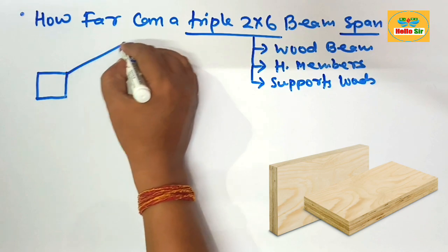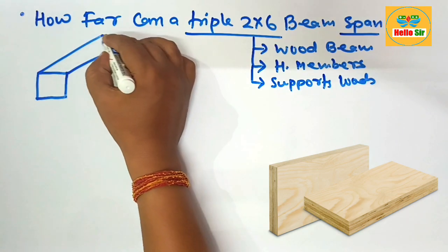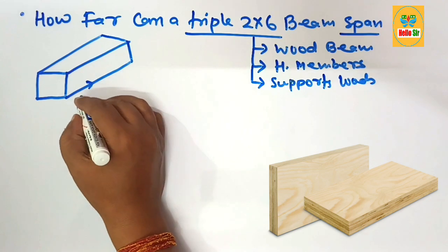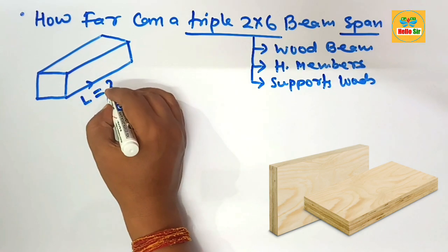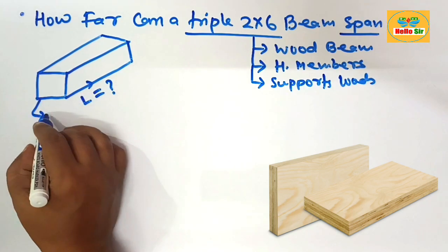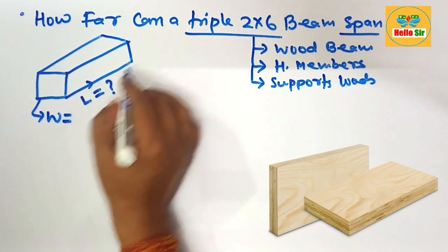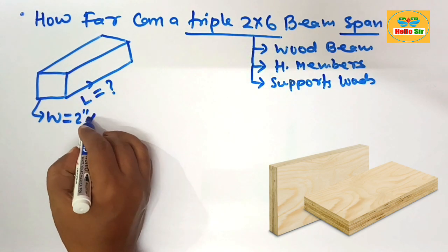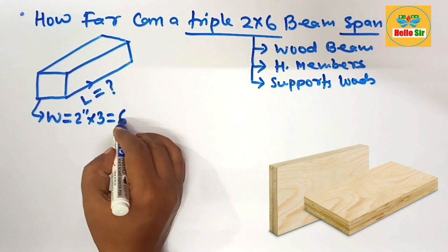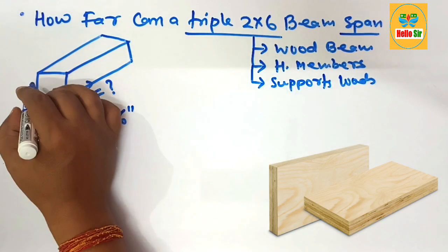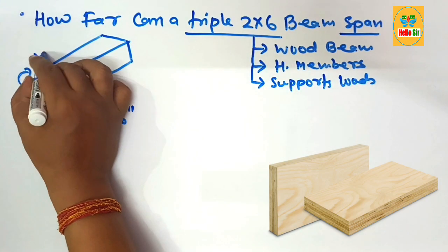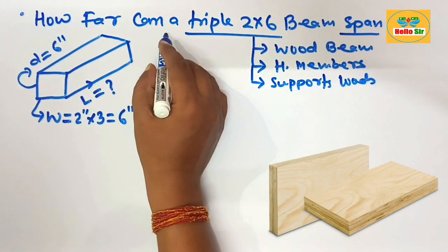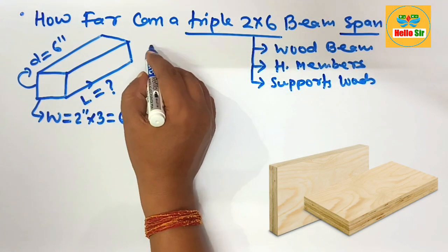First, here we make a rough diagram to understand the different dimensions of the wood beam. This is the length of the span we need to figure out. The width section of the beam is triple ply, meaning two inches multiplied by three, which equals about six inches. The depth of the wood beam is also six inches.